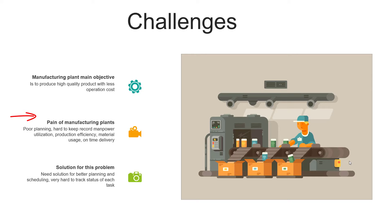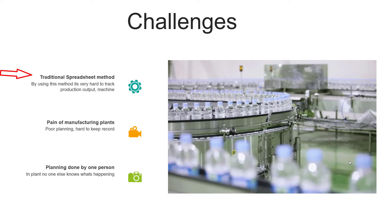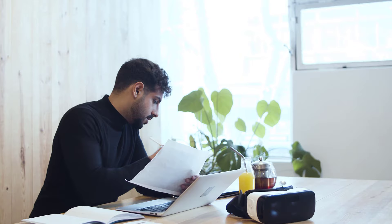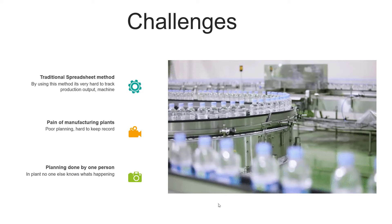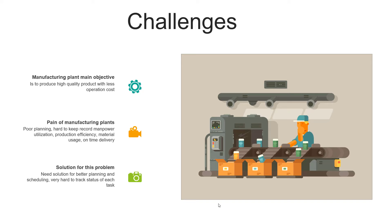When using the traditional spreadsheet method, it's very hard to track production output and machines. One of the bigger problems in manufacturing is that planning is mostly done by one person — no one else knows what's happening. That's very critical if that person is not available, making it very difficult to track what is happening in the organization.